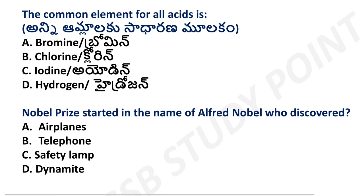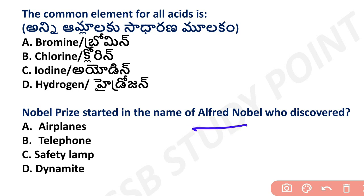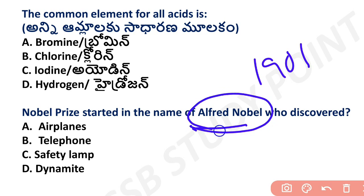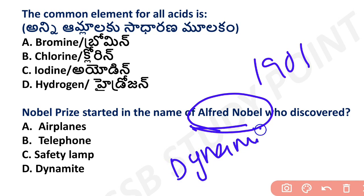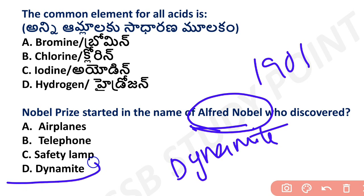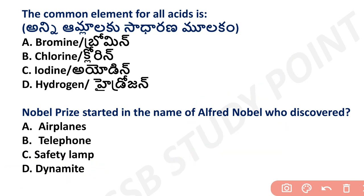Nobel Prizes were started in the name of Alfred Nobel. Nobel Prizes began in 1901. Alfred Nobel discovered dynamite, which is the most explosive element. The Nobel Prize was established using the proceeds from dynamite.